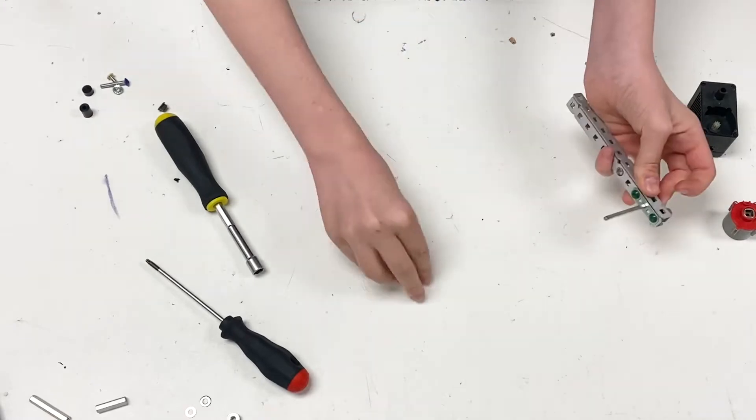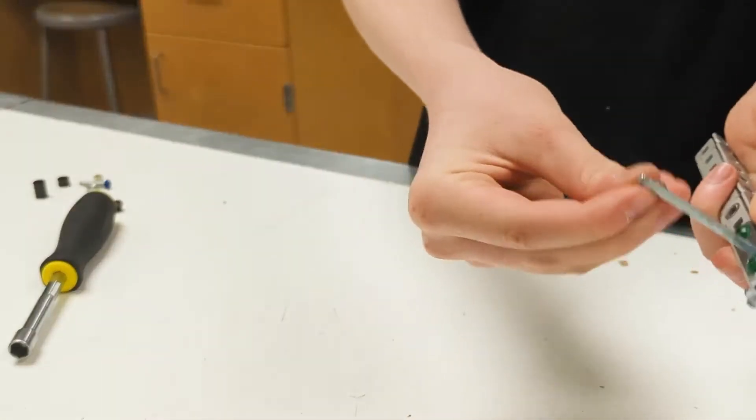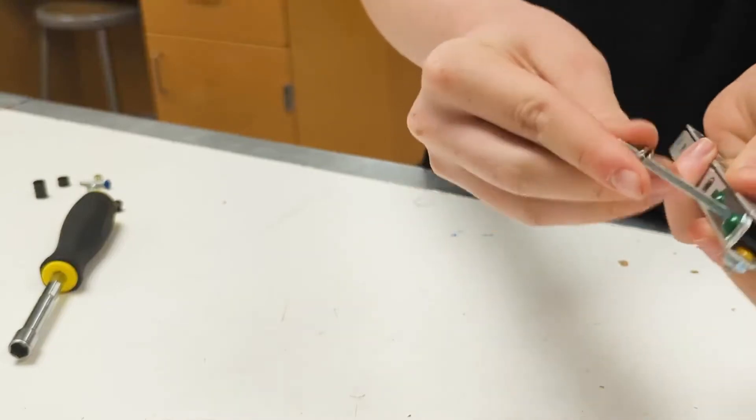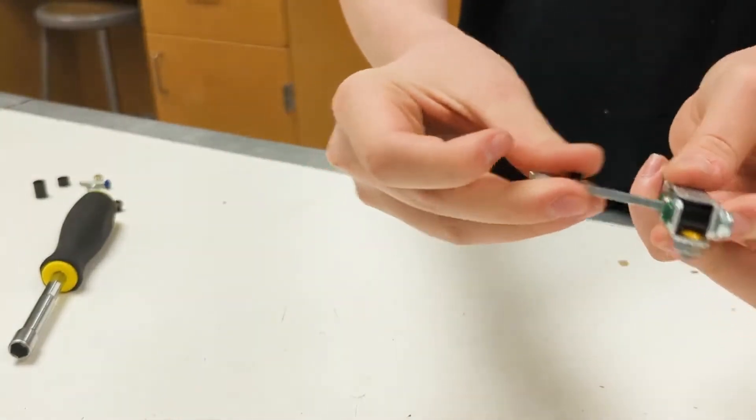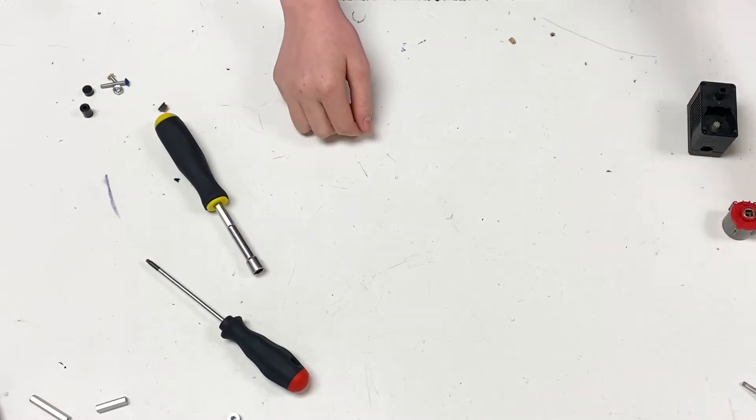After that, two washers first. Two washers and a 1. And then you're going to take this assembly and put it to the side.